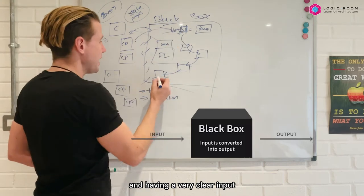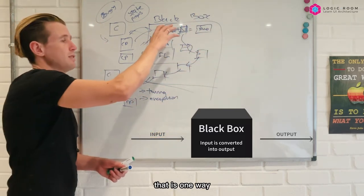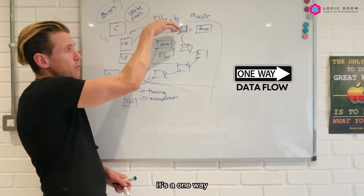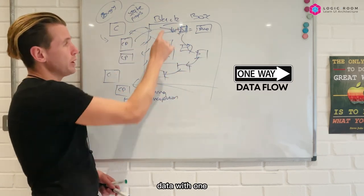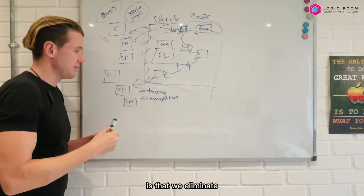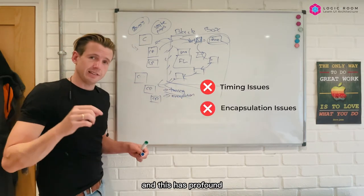And having a very clear input and output to this black box driven by a reactive architecture that is one way in nature. This is what we're talking about: it's a one-way data flow of data with one simple state stored in the middle. What happens is that we eliminate timing issues and we eliminate encapsulation issues.